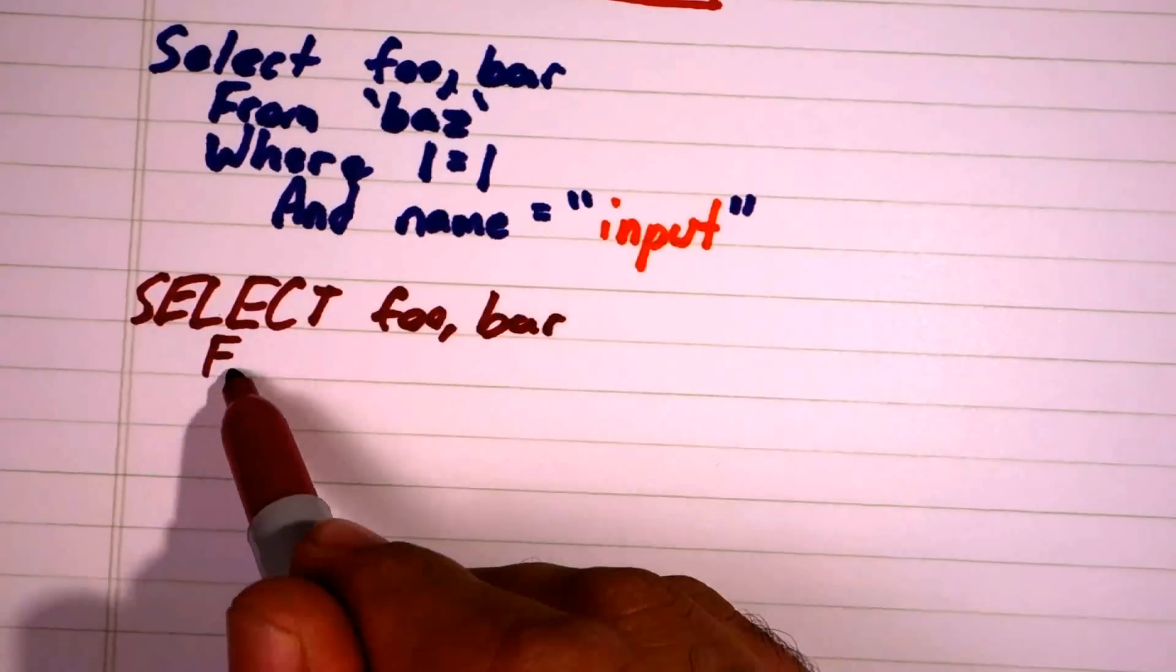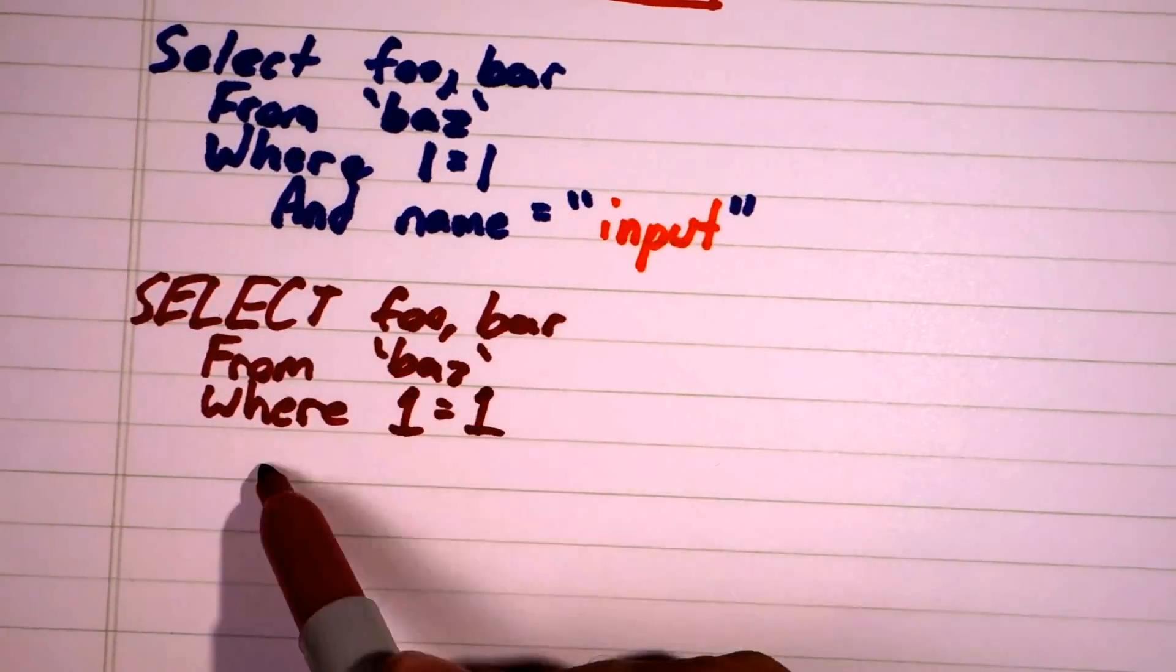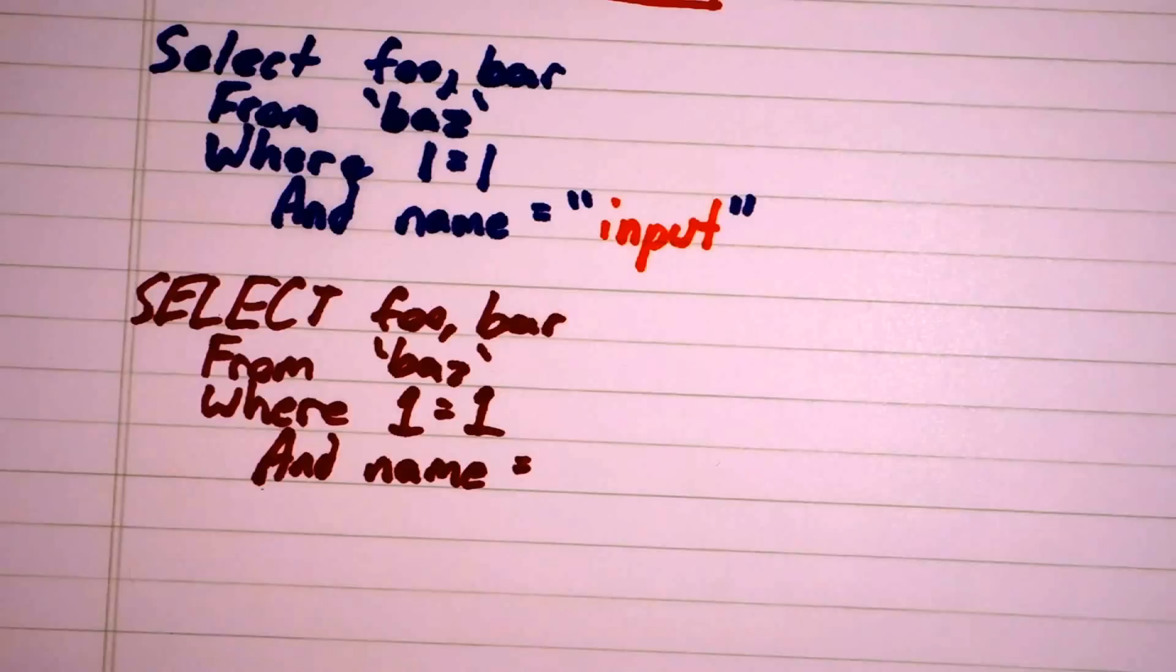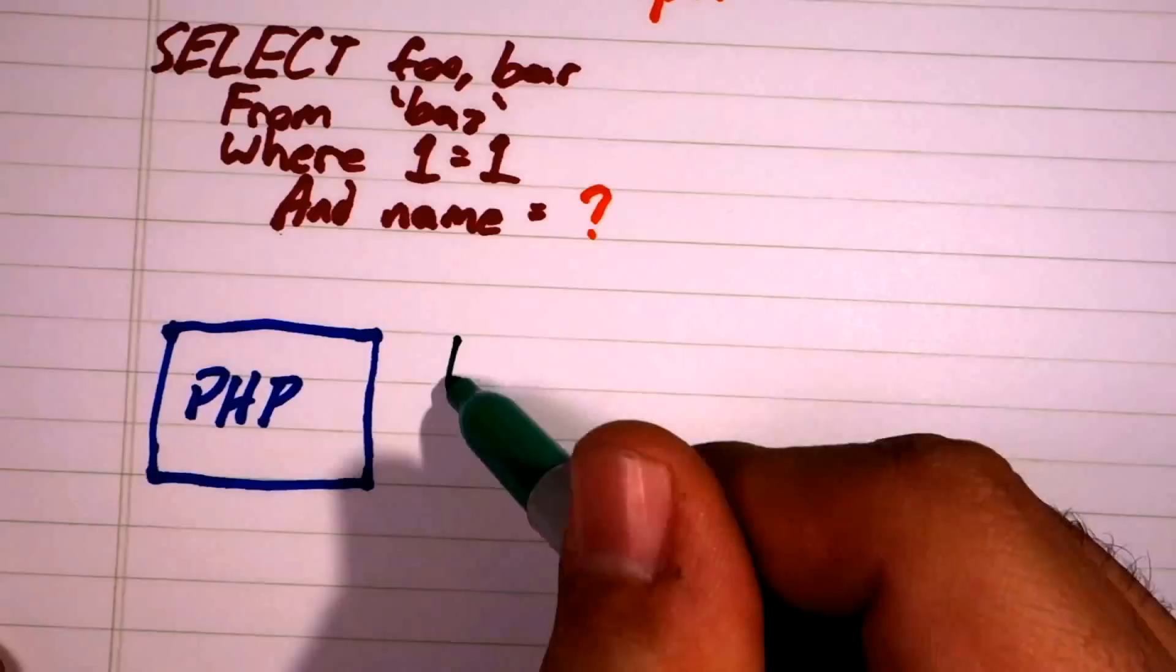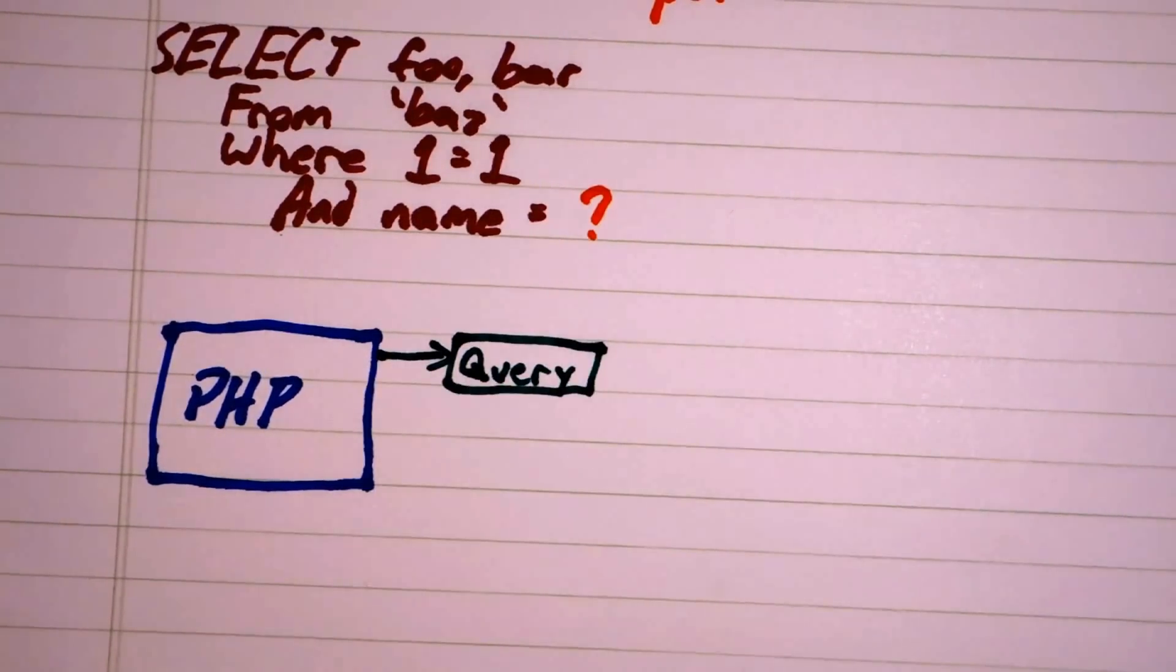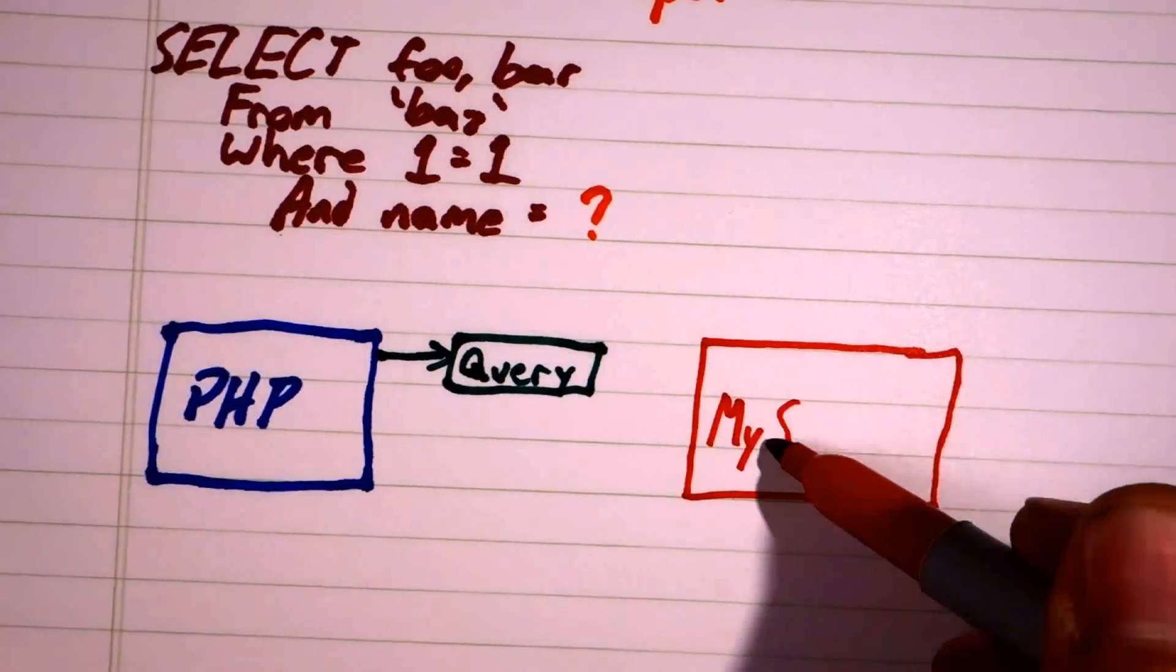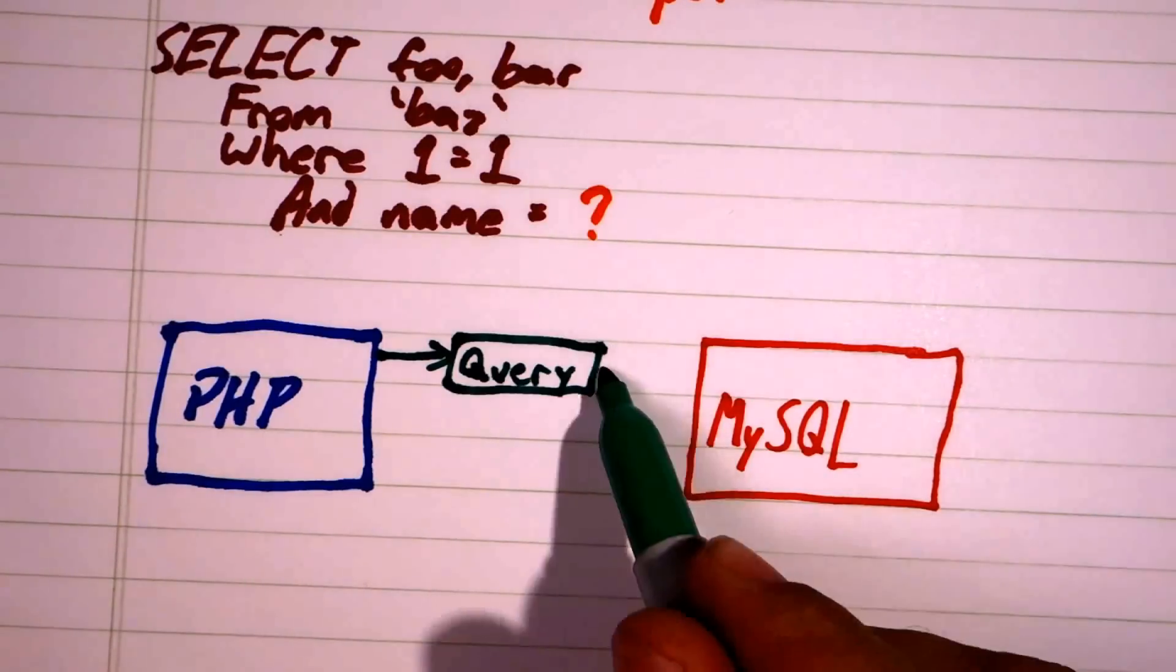But databases offer another way of executing the query. Databases offer variables. When we create a prepared statement, we use these variable placeholders and then send the variable's content to the server separately from the query data.